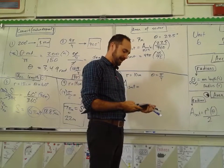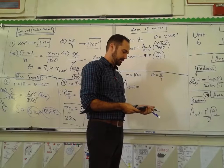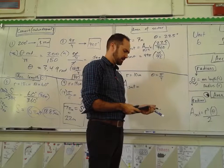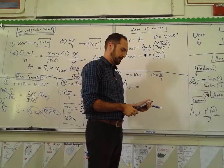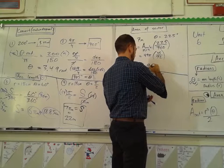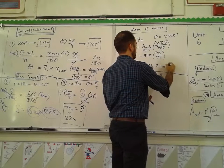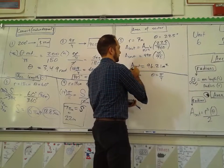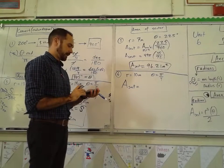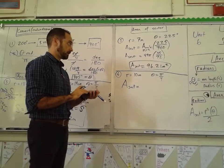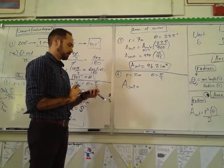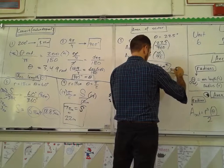Dividing 49π times 45 by 72 gives approximately 96.21 meters squared — because it's an area. If you leave it in terms of π, you get approximately 30.625π.